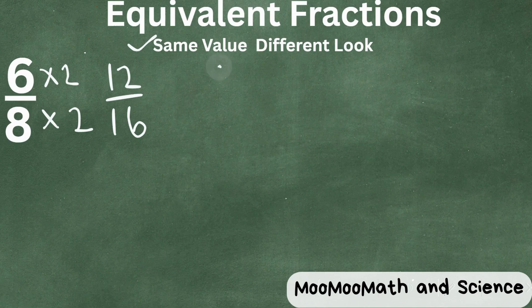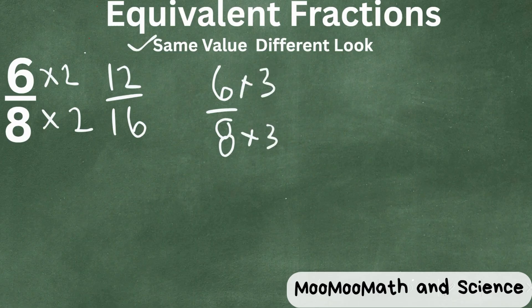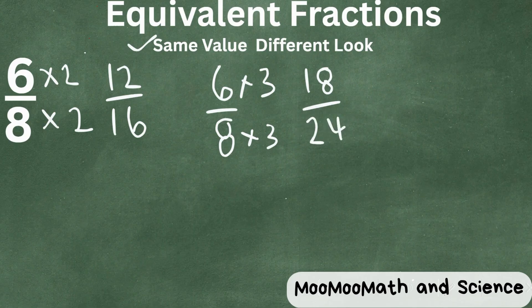Or we could go 6/8ths times 3. 6 times 3 is 18, and 8 times 3 is 24. Again, that is an equivalent fraction.